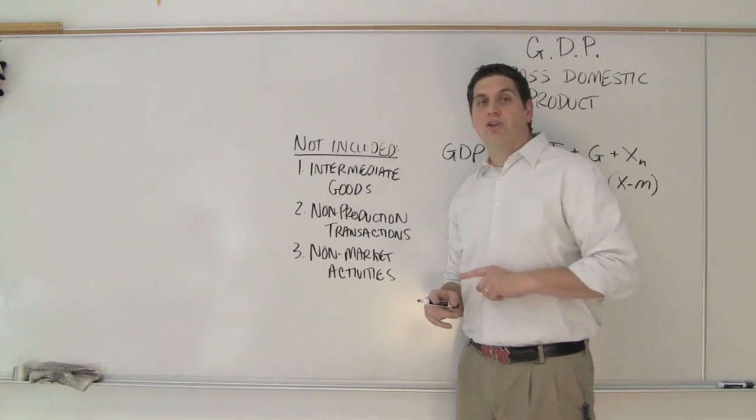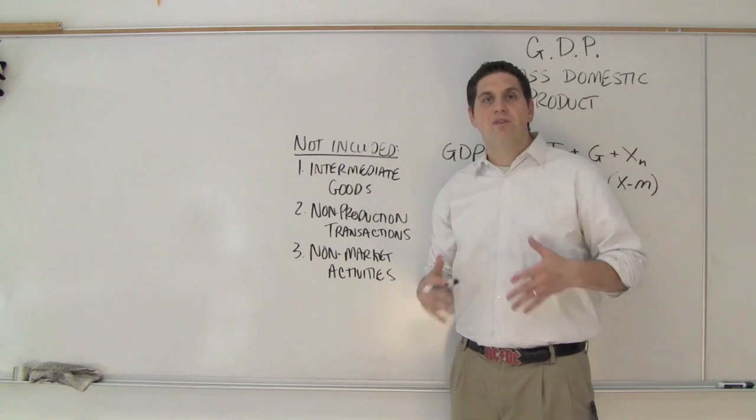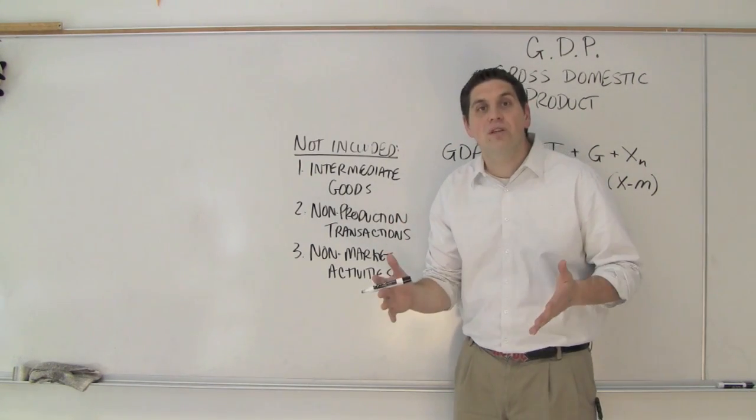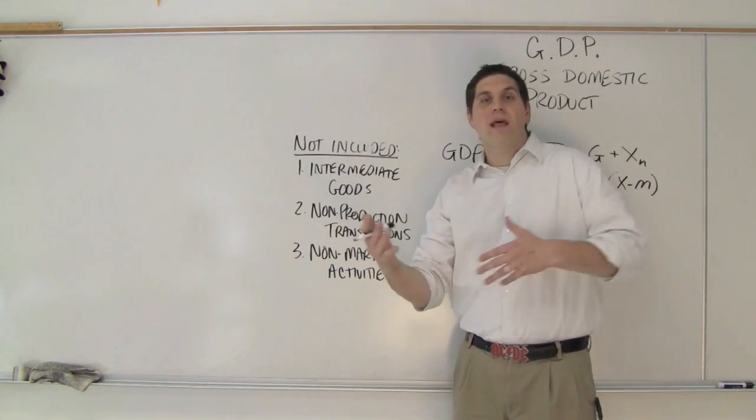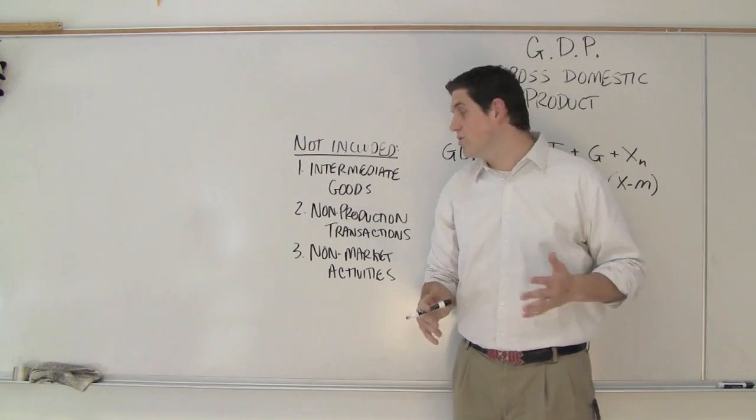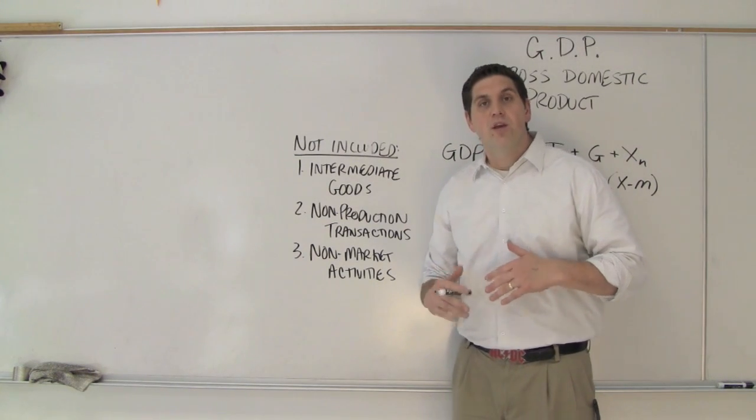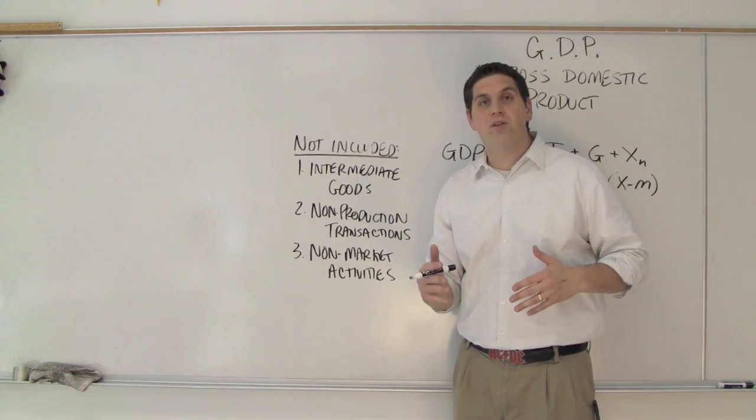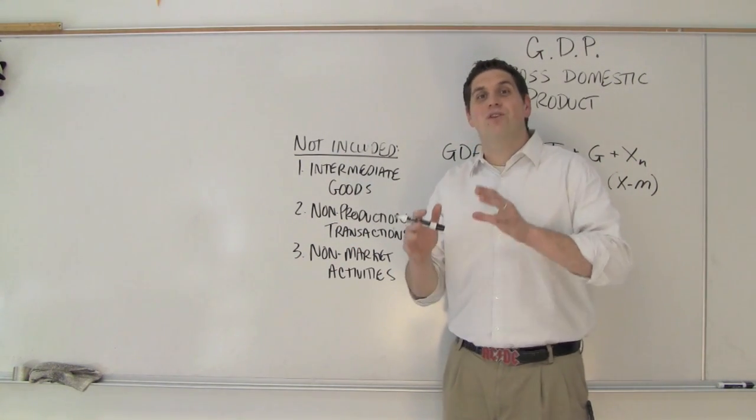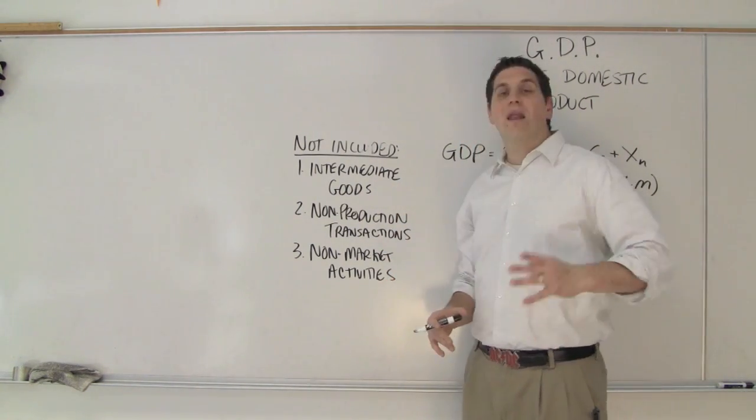The next thing is non-production transactions. There are certain things in the economy that transfer hands all the time. Stocks, bonds, ownership of houses. So when you own a house, now I buy it from you, now I own the house. Nothing was produced and if it wasn't produced, it doesn't count towards GDP. A good example of this is used goods. Used goods that are purchased by another person. Those products count for the year they were produced. That's the GDP accounts for, the year they produce, not when they're sold again.